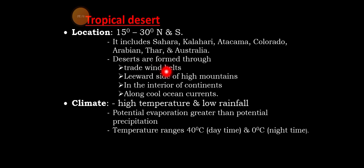In the tropics of Cancer and the Tropic of Capricorn, the trade wind belt is a major cause. For example, the Sahara Desert is formed this way, and on the other side, mountains that are still in the desert also play a role.